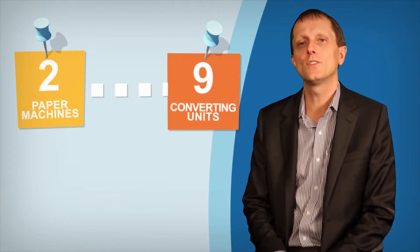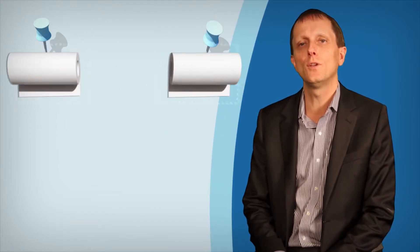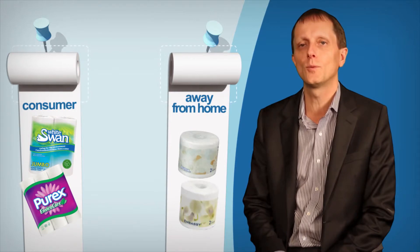Our tissue plant in New Westminster, British Columbia serves Western Canada from Vancouver Island to the Lakehead region of Ontario. It operates two paper machines and nine converting units that produce a full line of well-known consumer and away-from-home tissue products.